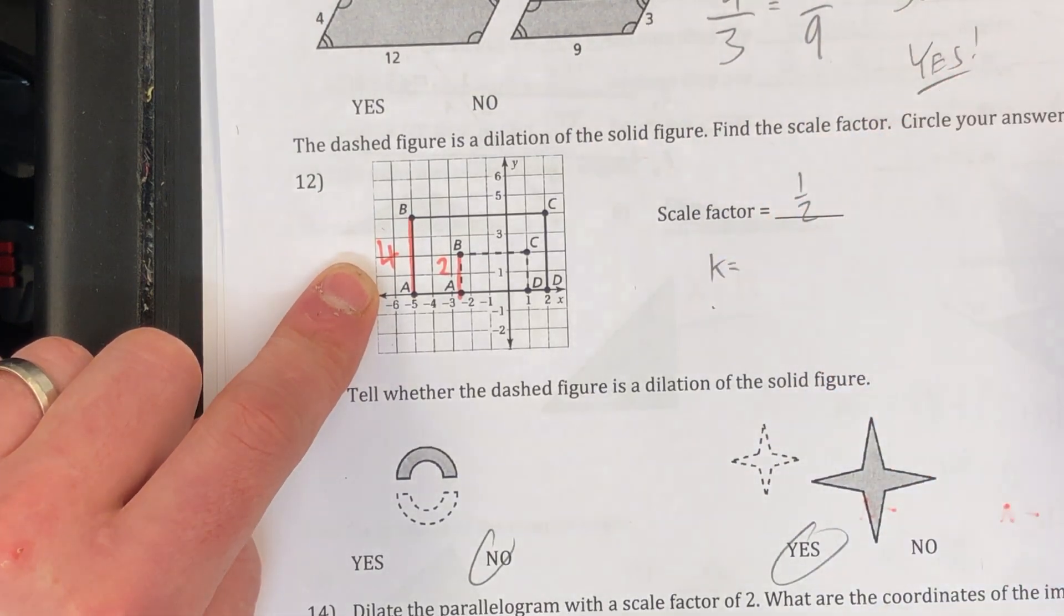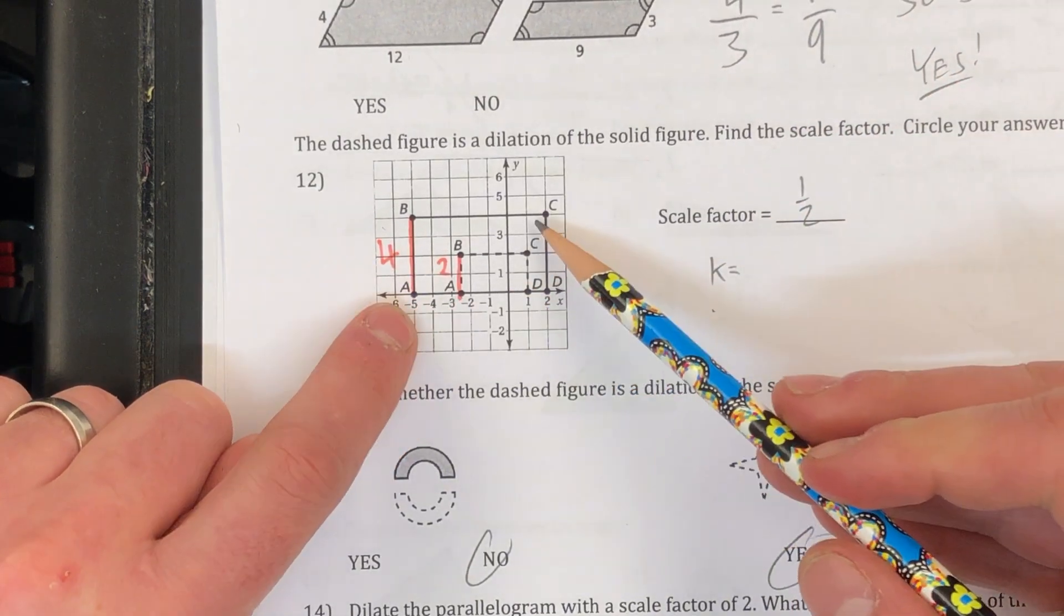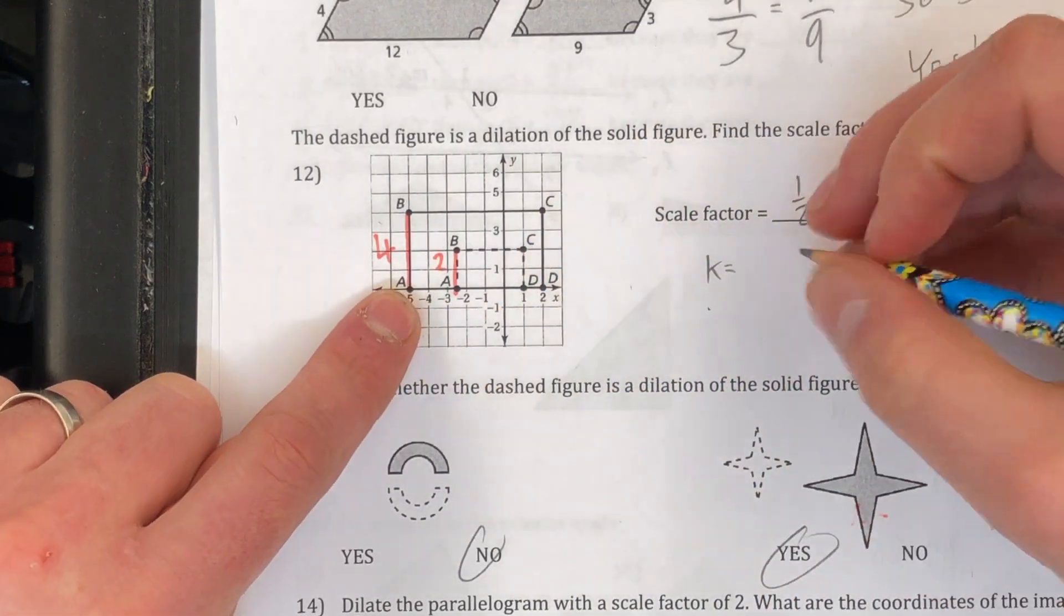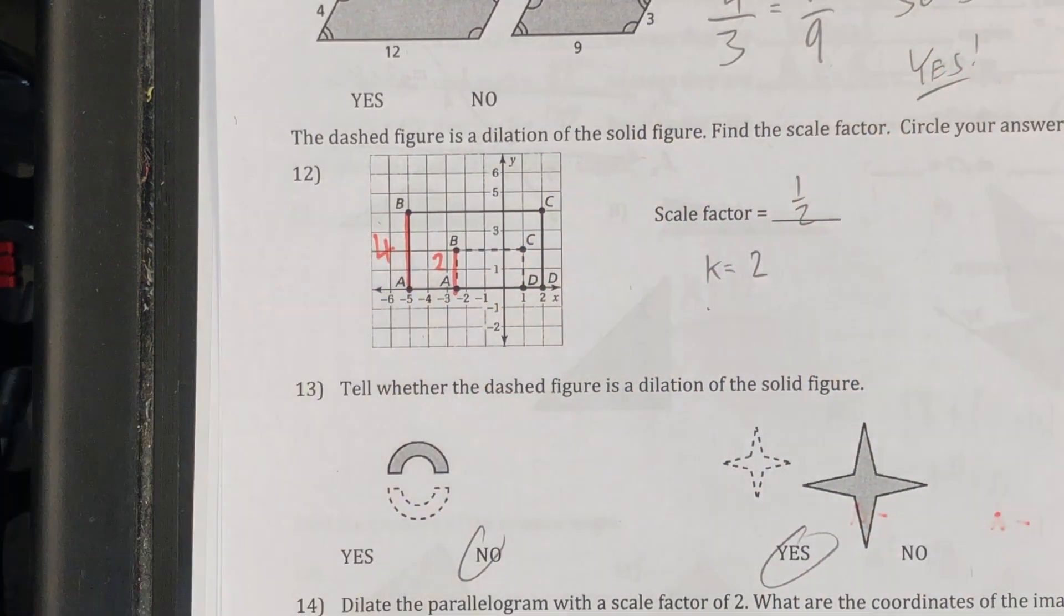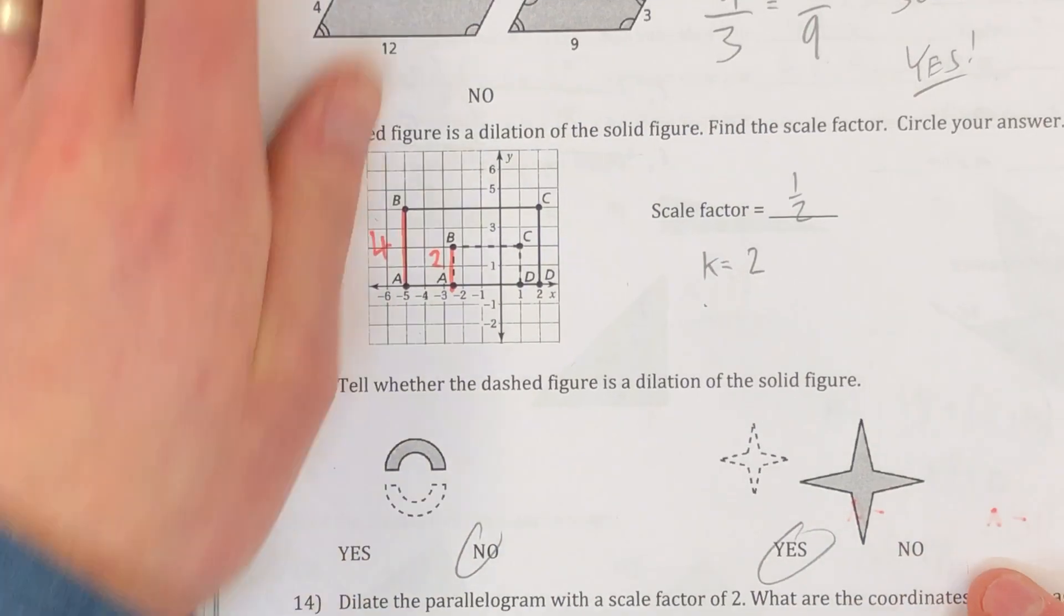Now, if it was the other way around, if it was from the dashed figure up to the solid figure, well, then it's getting bigger. So that would have been a scale factor of 2.